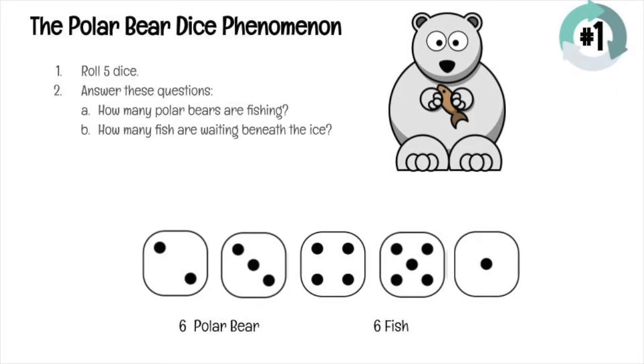How many polar bears are in these five dice? Well, I'm going to tell you the answer. There are six. But what you have to figure out is how I knew that. There are also fish waiting beneath the ice. How many fish are there? Well, I'm going to tell you that, too. There are six. So what do you think? What's your first guess?